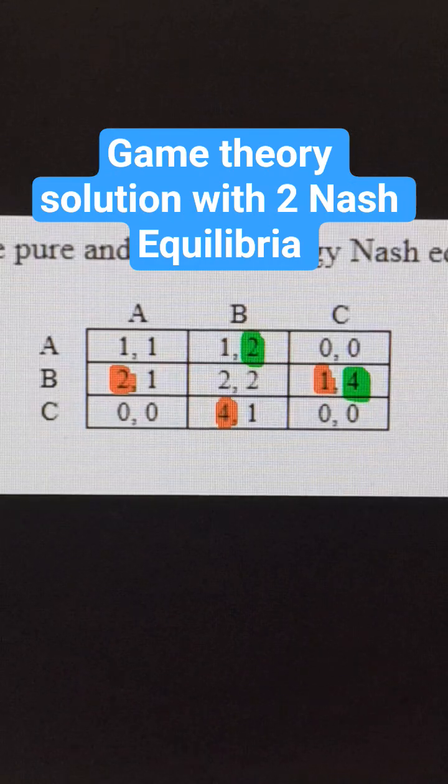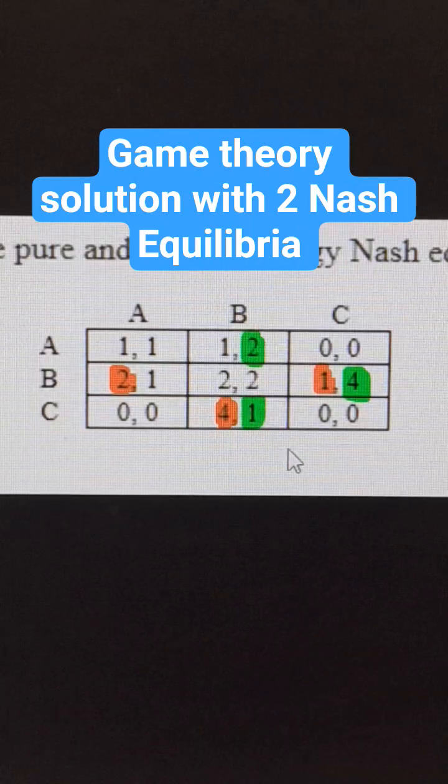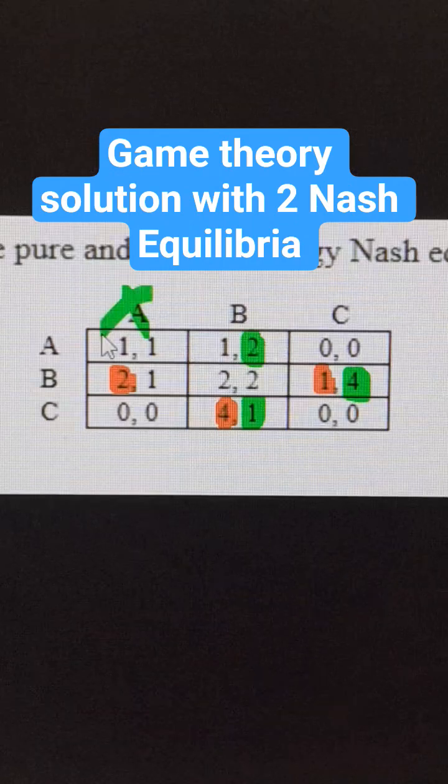And then if player 1 goes C, player 2 should go B. This makes this a dominated strategy.